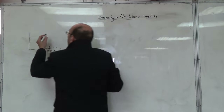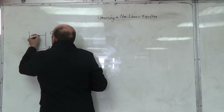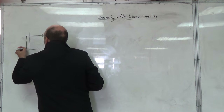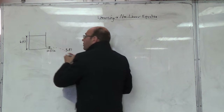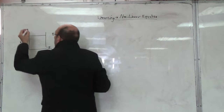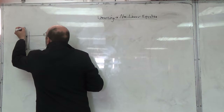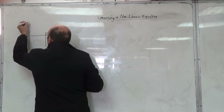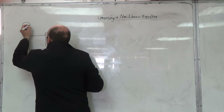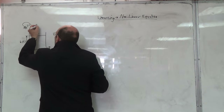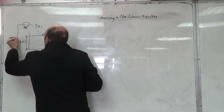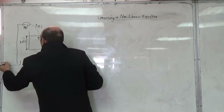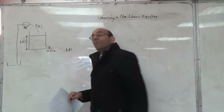We will model the tank. The tank level is h(t), the output flow from the tank is q_out(t), and the input flow is q_in.